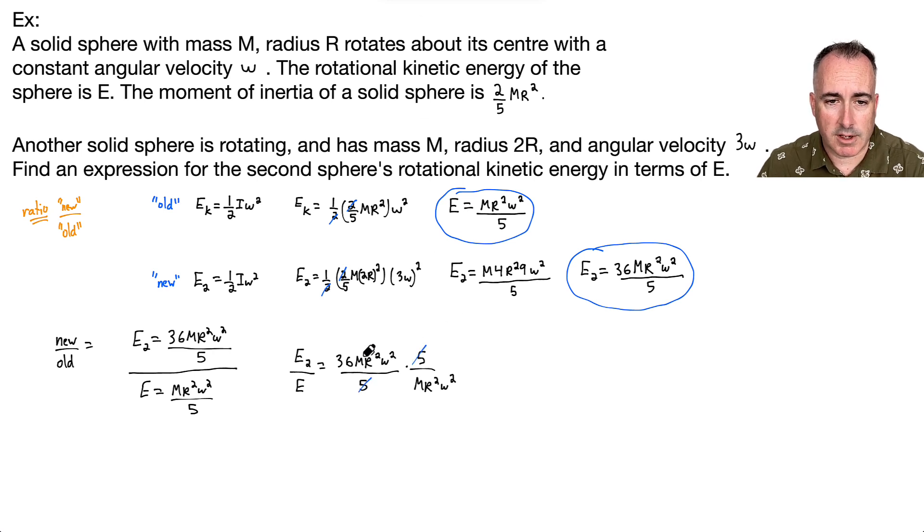The 5s cancel out. The M R squared omega squareds cancel out. What am I left with? E2 over E equals 36. Therefore, if I want to get E2 by itself, that equals 36 times E. And that's my final answer.